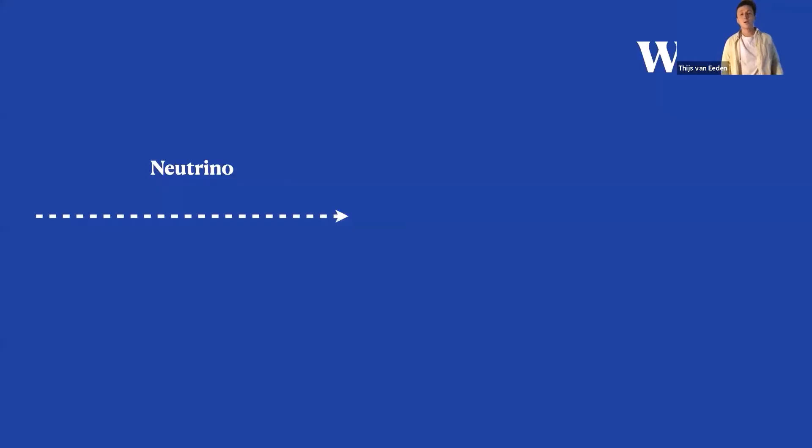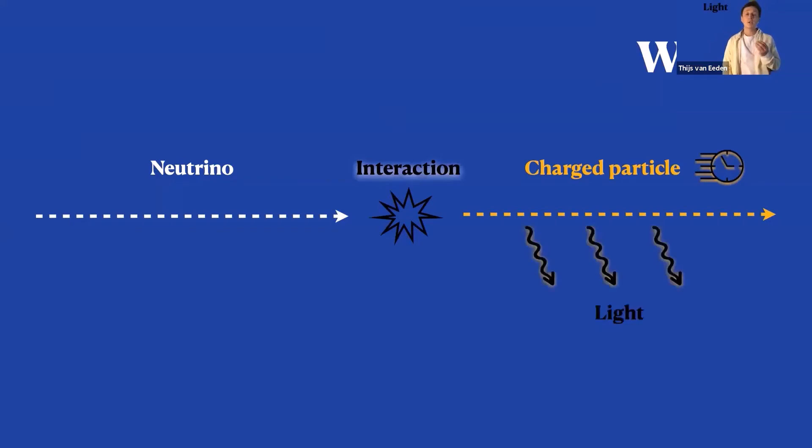So let's take a look at a neutrino entering one of our oceans. If this neutrino interacts, it will produce a charged particle. These charged particles do something very interesting because they go so fast that they exceed the speed of light in water. This produces a shockwave of light that we can actually see.